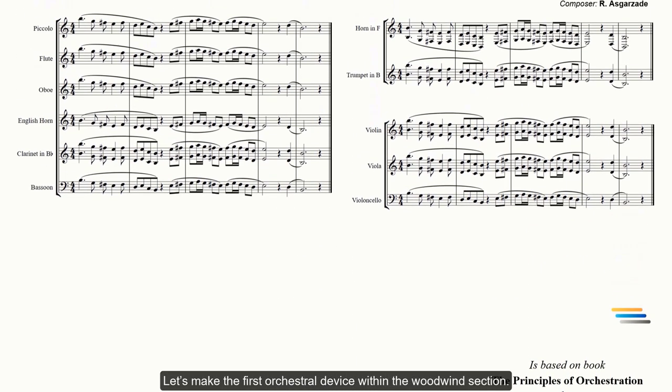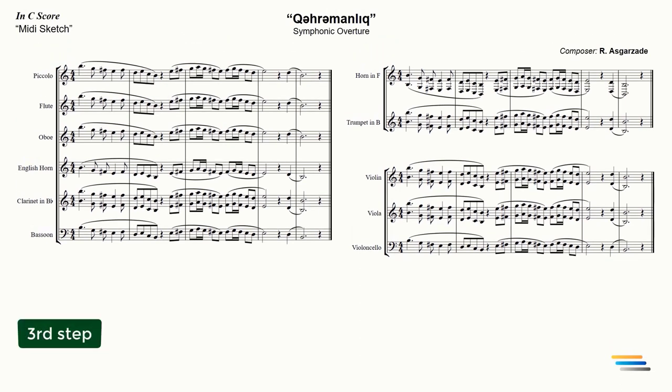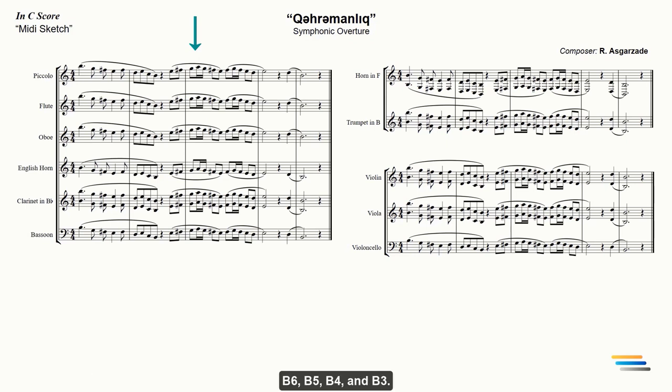Let's make the first orchestral device within the woodwinds section. If you look at the sketch, you can see that woodwinds are possible in 4 different registers: B6, B5, B4 and B3. I am going to use all of this.